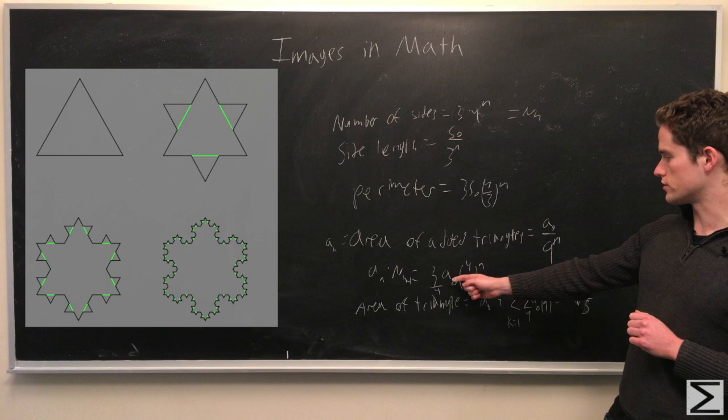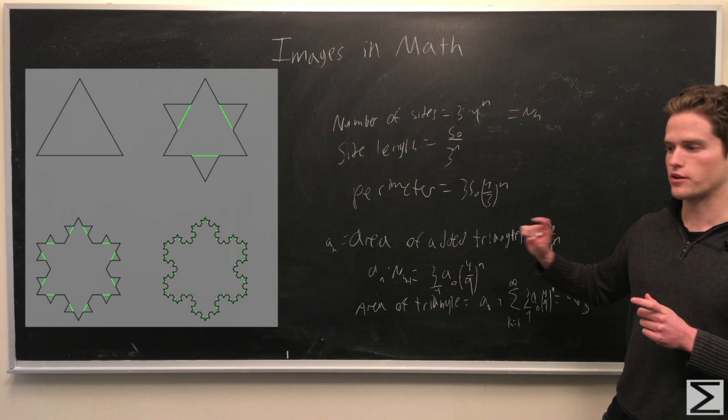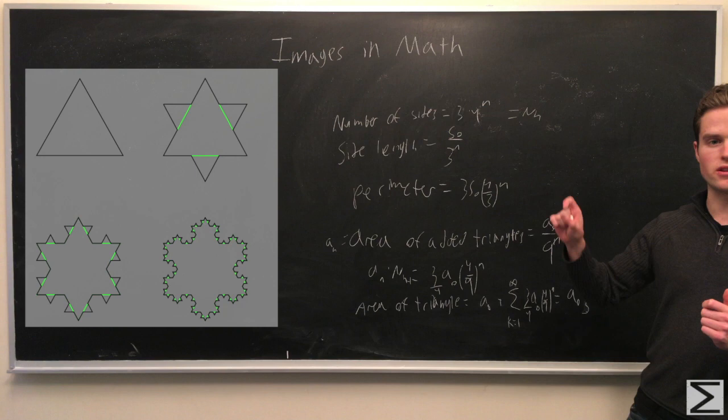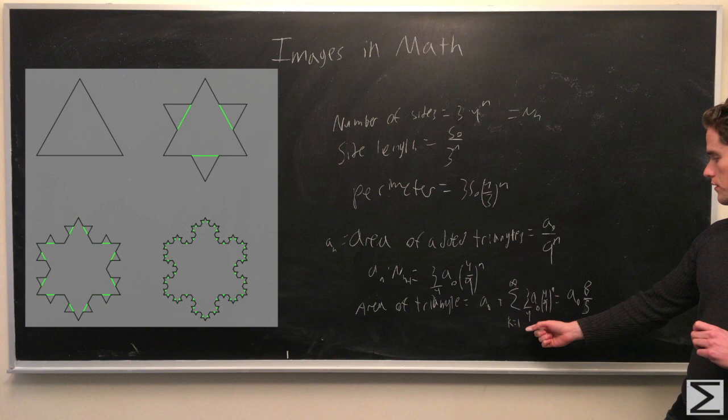So this goes to (3/4)a₀ times (4/9)ⁿ is the amount of little triangle area we add at each iteration. And so the area of the big triangle is you add up all these areas. So we have the initial area which we're calling a₀ plus sum k equals 1 to infinity of all these little triangles.